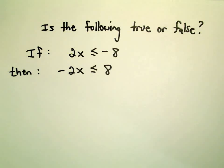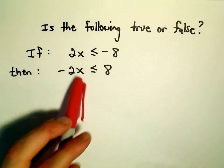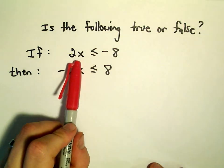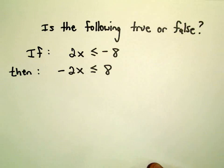We want to think about some properties of inequalities to compare these two expressions. Suppose we know it's true that 2x is less than or equal to -8.